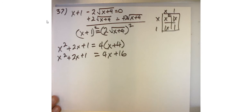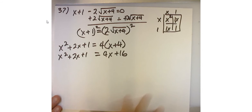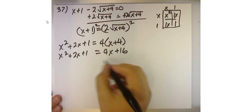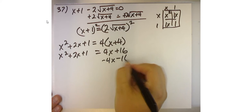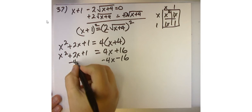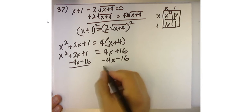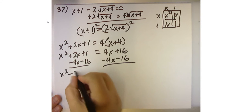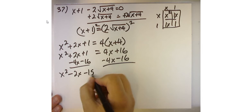So now I've got a quadratic thing going on if I move these two terms over to the other side. So I'm going to subtract 4x and subtract 16 all at once. And I get x²-2x-15 = 0.